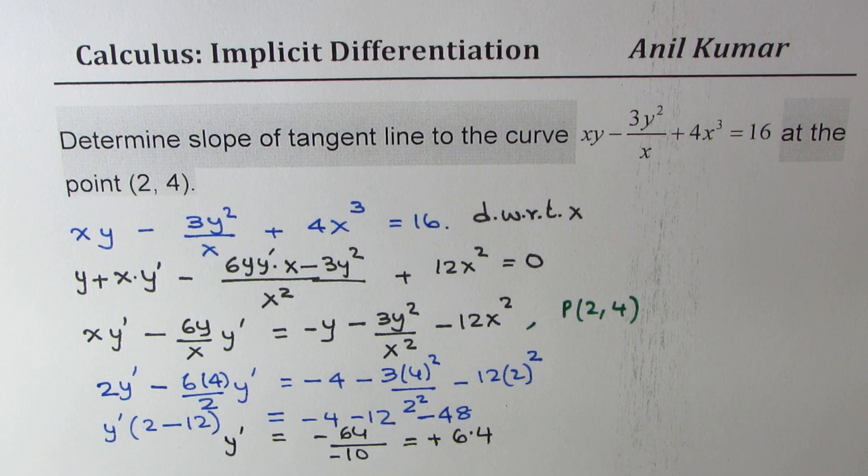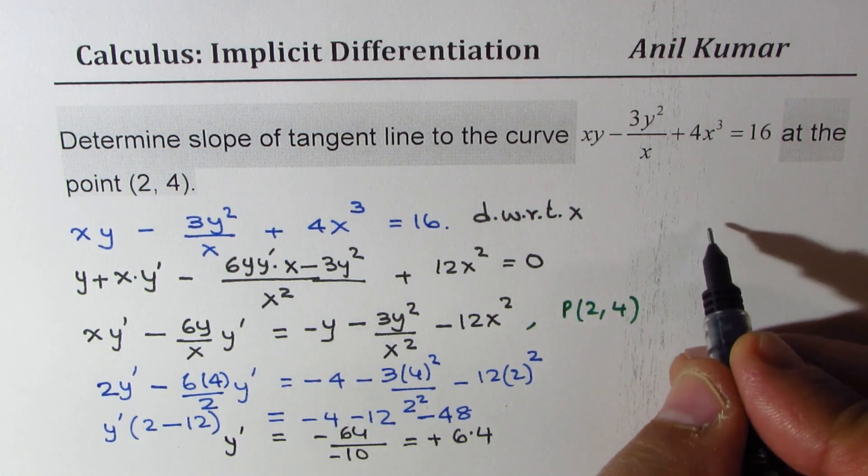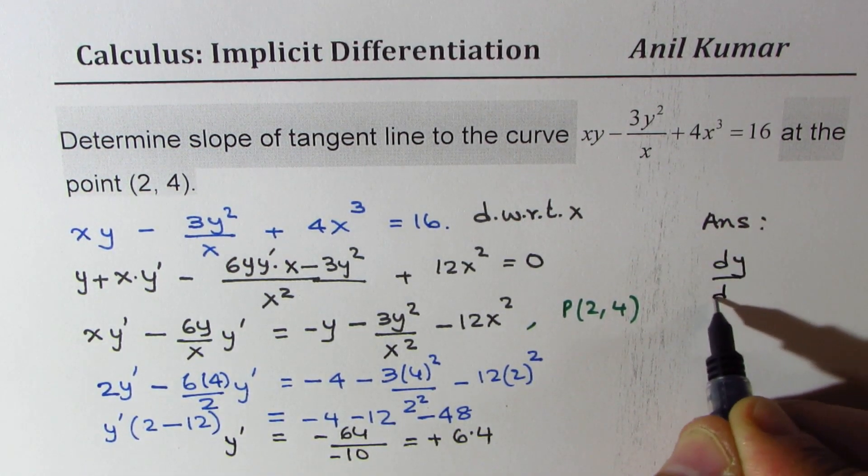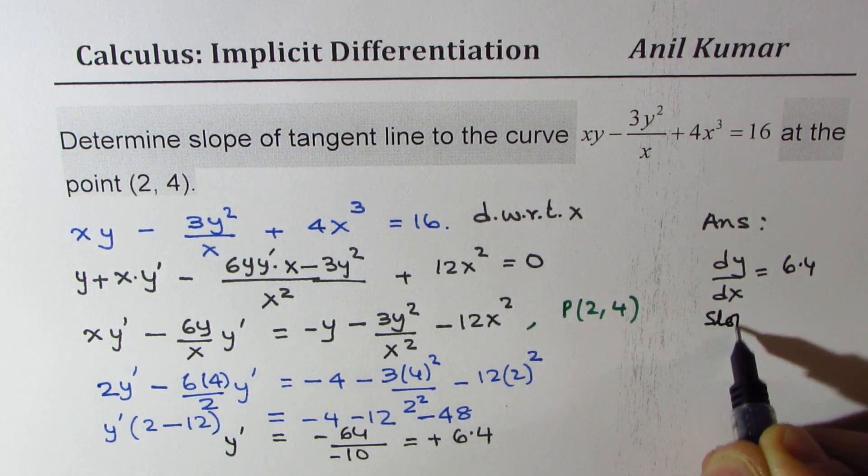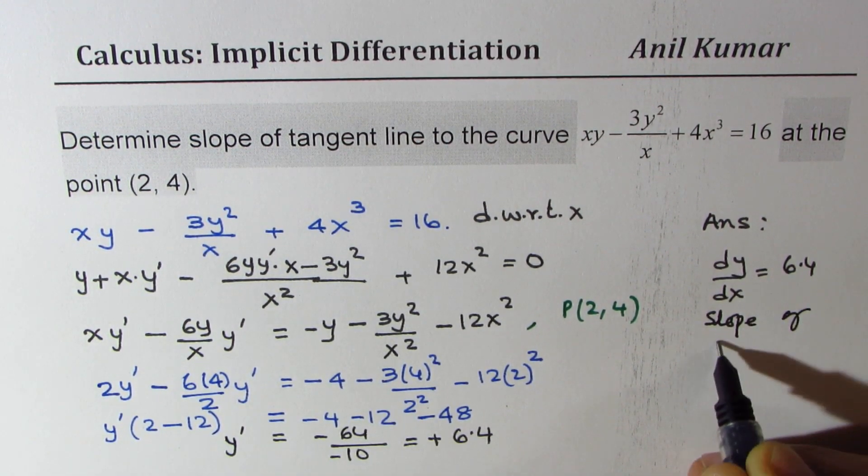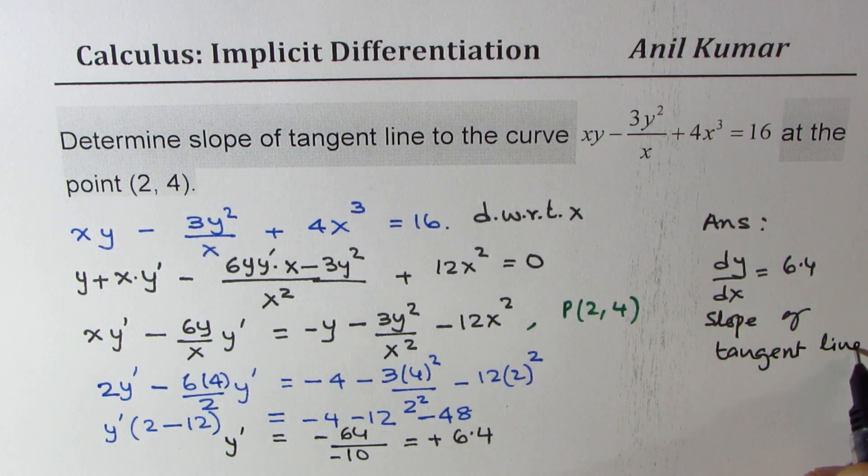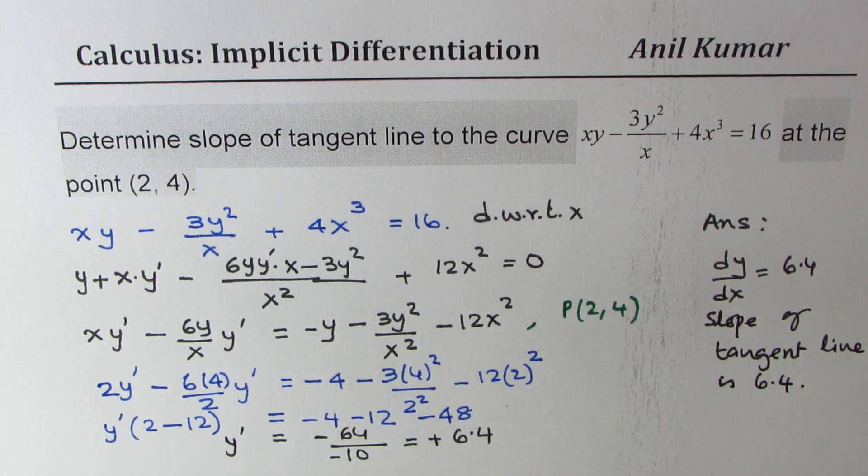So that is the derivative of the given function at the point 2, 4. So we get our answer, and that is dy dx is 6.4, or the slope of the tangent line is 6.4, perfect. So that is how it could be solved.